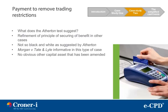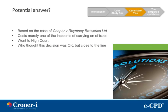First, looking at a payment to remove trading restrictions: what does the Atherton test suggest? There was a refinement of the principle of securing of a benefit in other cases. This does not appear to be so black and white as suggested by Atherton. The Morgan vs. Tate & Lyle case is very informative in this type of case. There is no obvious other capital asset that has been amended. This is based on the case of Cooper vs. Rimney Breweries Ltd. Costs were merely one of the incidents of carrying on a trade. It went to the High Court, who thought this decision was OK but close to the line.